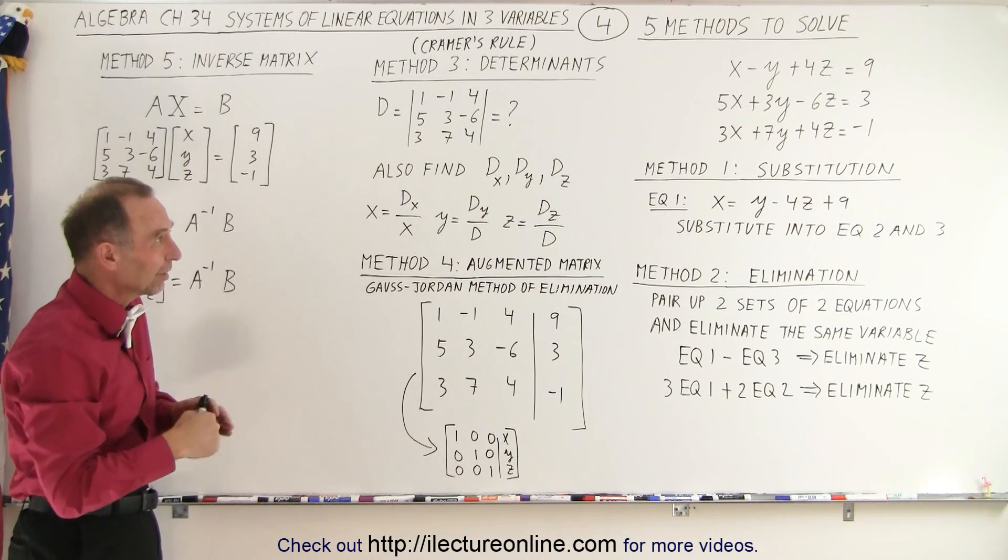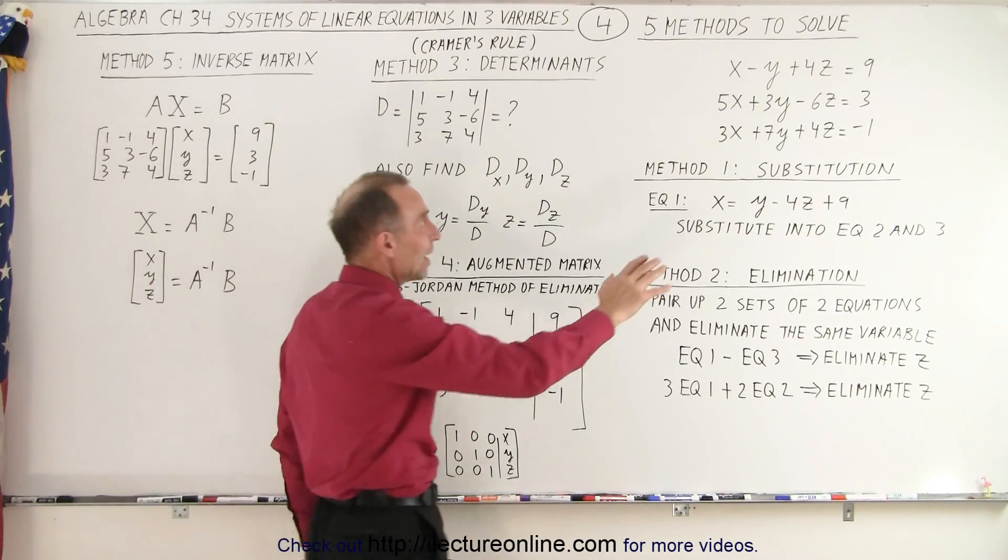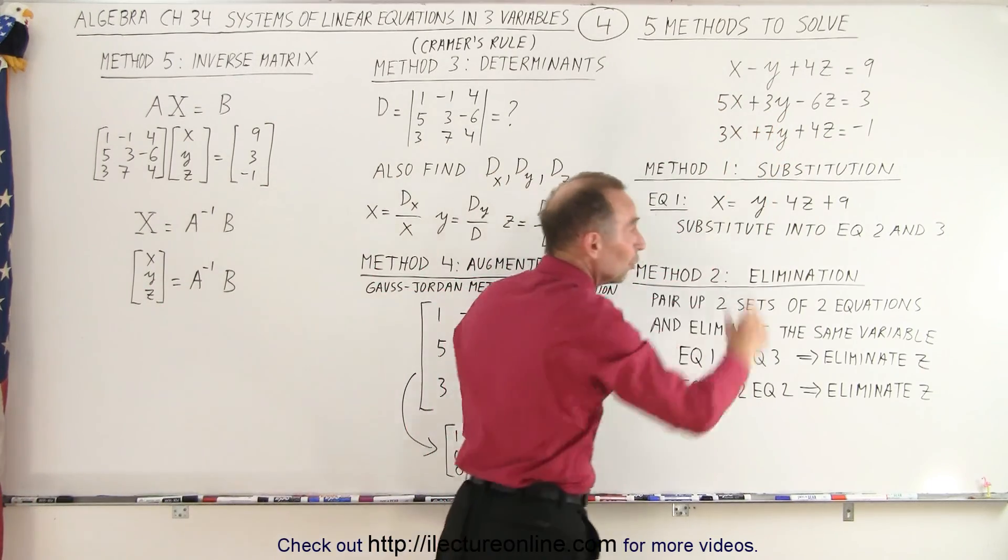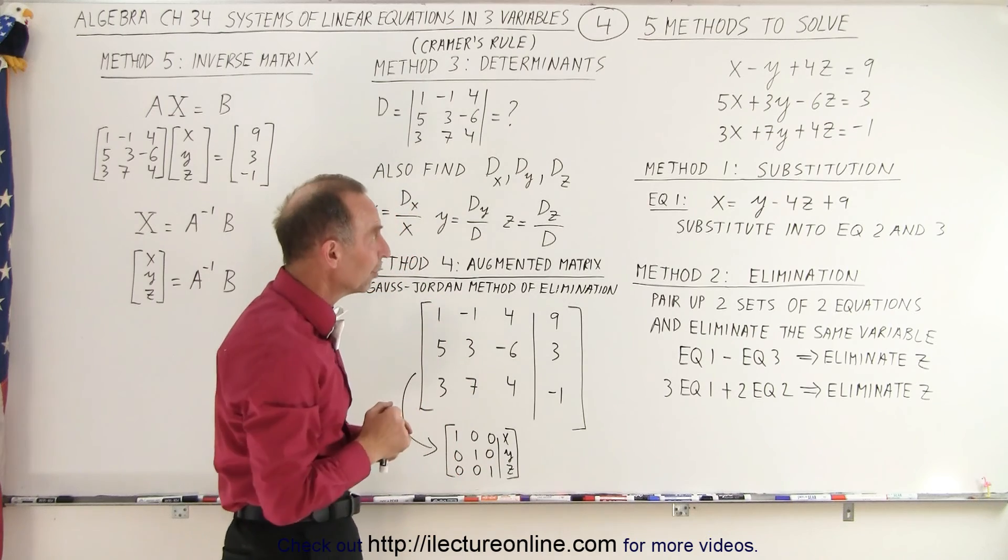So let's take a look a little bit what these things are. So again, let's say we have the three equations, three unknowns. This is known as a system of linear equations in three variables.